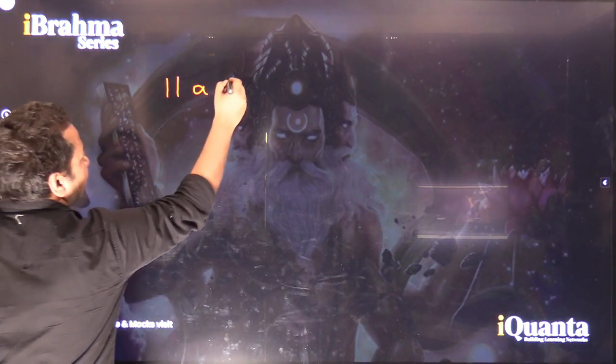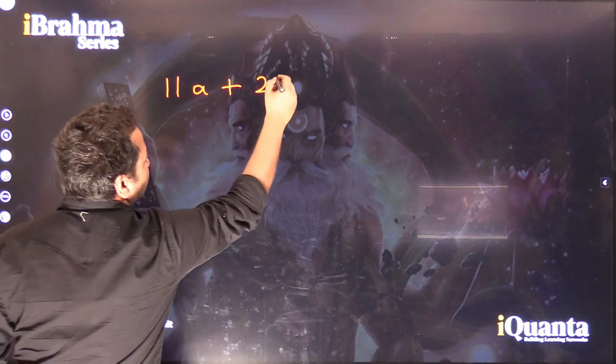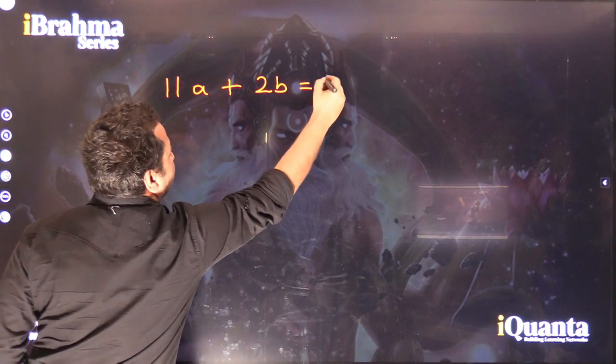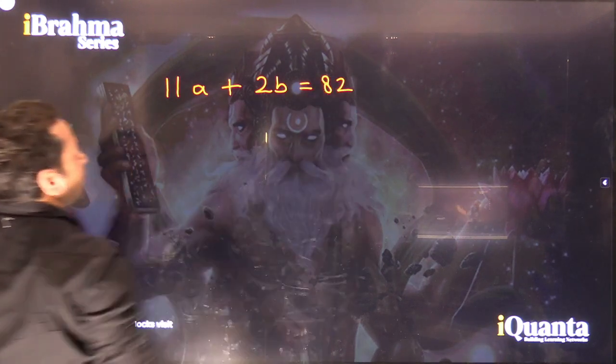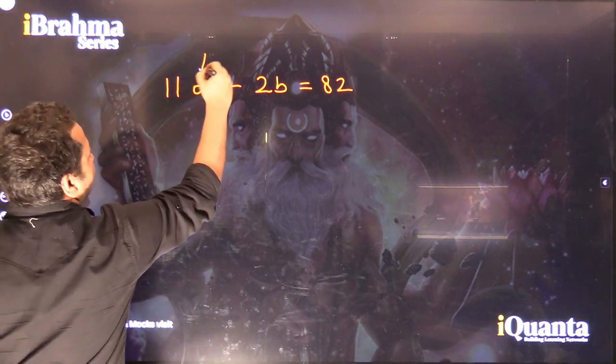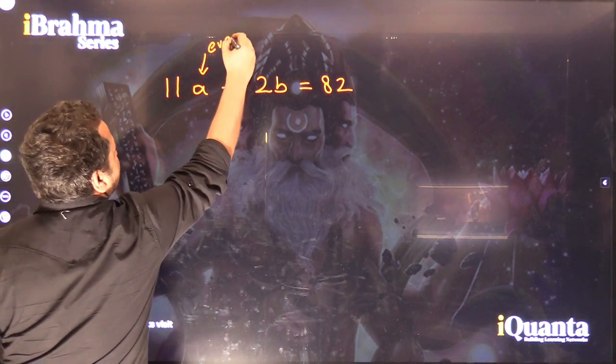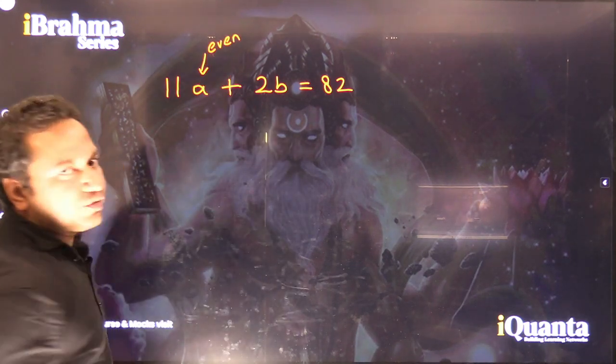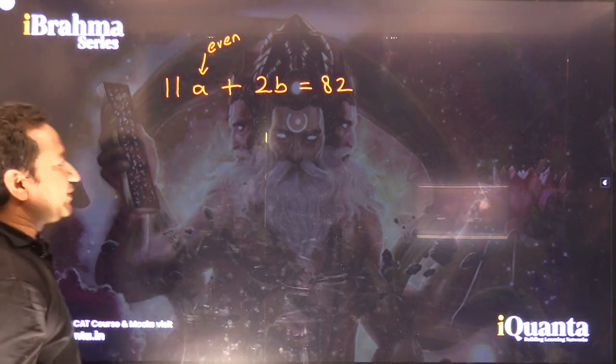The equation from the previous slide was 11A + 2B = 82, and we also discussed that A has to be even. Moreover, we have to maximize the value of the number.